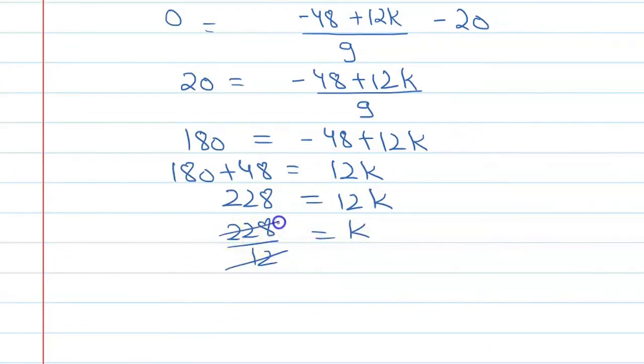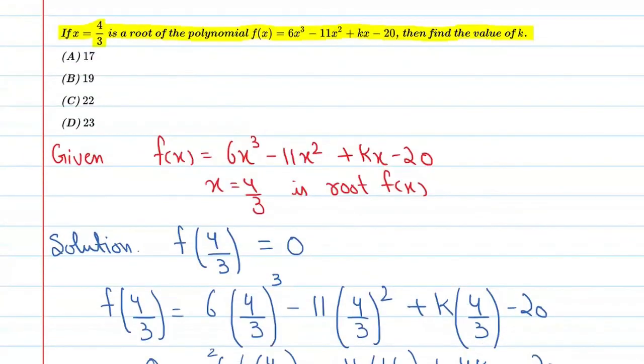And we will get k is equal to 19. So if you look at the final option, k is equal to 19 which is option B.